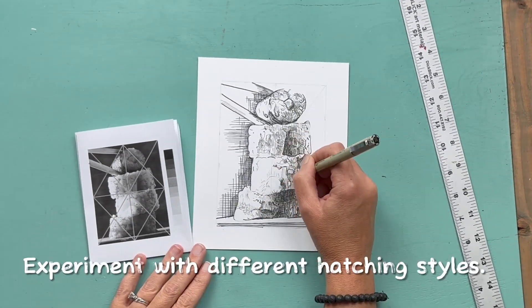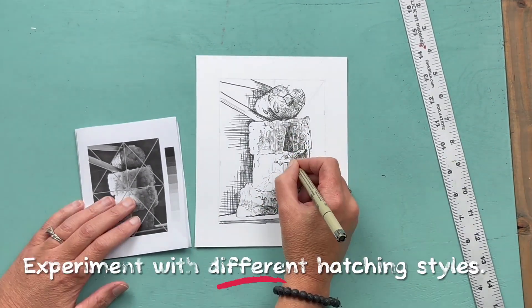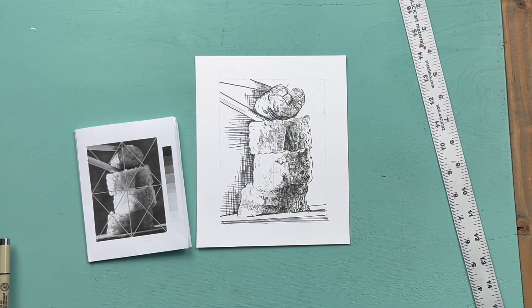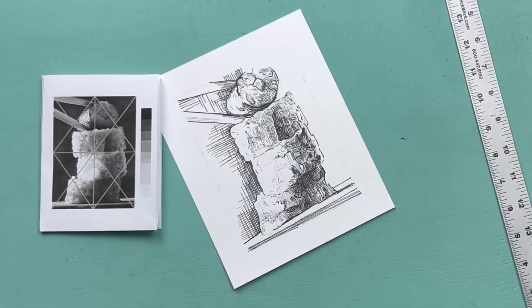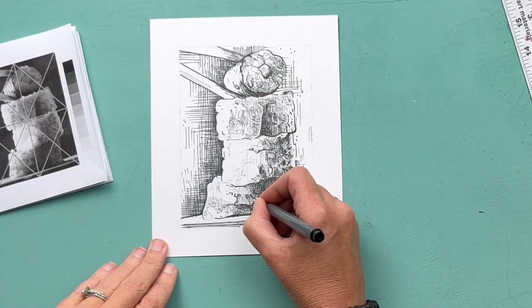By creating this shadow in the background, I'm defining the edge of my form, but I'm not necessarily going to darken the entire background.